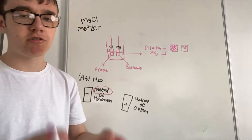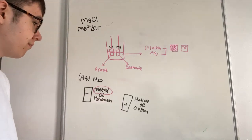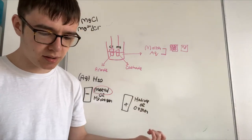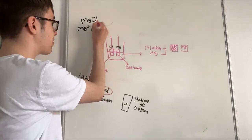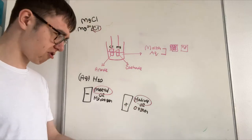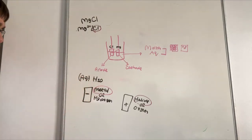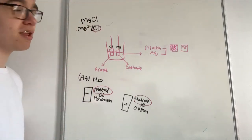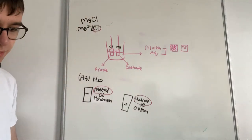Magnesium is more reactive than hydrogen, which means it will be magnesium in this instance. In some instances where hydrogen is more reactive than your metal, you'll get hydrogen instead. For the anode: if you have a halide it'll be a halide; if you don't have a halide it'll be oxygen. Chlorine is a halide so you'll get your halide. In molten it's straightforward — you get your chlorine and magnesium.